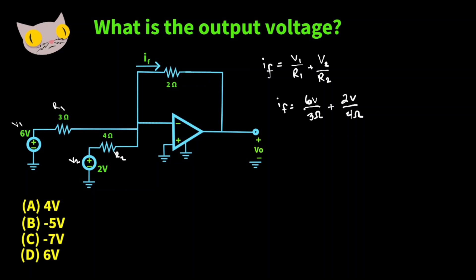So now we have 6 volts over 3 ohms plus 2 volts over 4 ohms and that's going to give us a value of 2.5 amps.